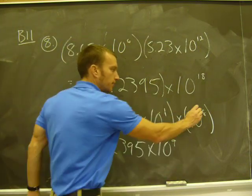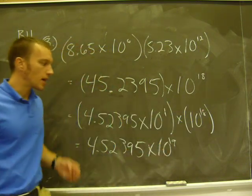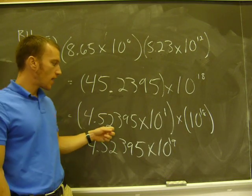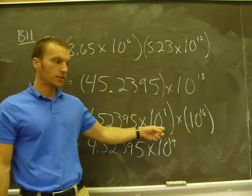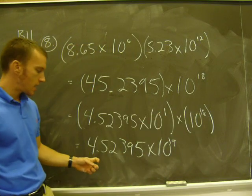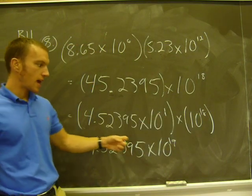Oh, that should be an 18th. So that should be a 19th. So it was 4.52395 times 10 to the 1st times 10 to the 18th. And I did a little adjustment, which is going to add 1 to that power.